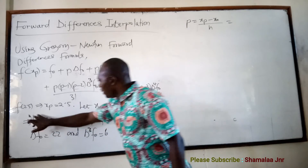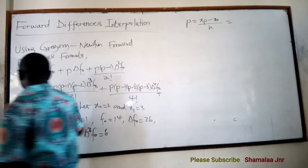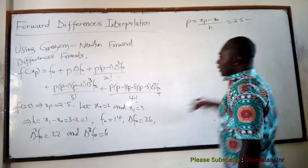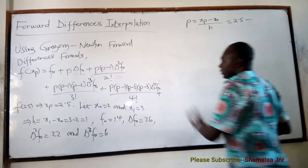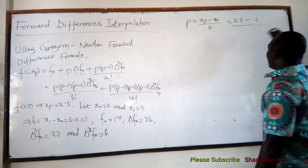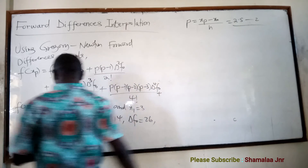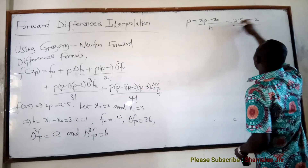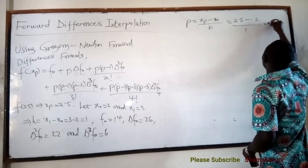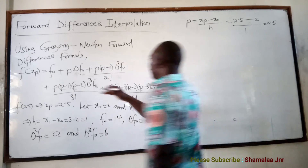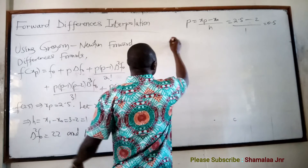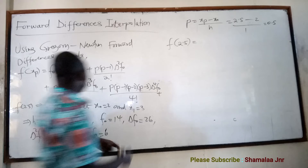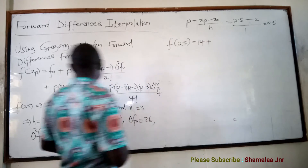So p = (2.5 − 2) / 1 = 0.5 / 1 = 0.5. Now we can substitute into the formula. f(2.5) = f0 + p·Δf0 + ... So we have: 14 plus 0.5 times 26.